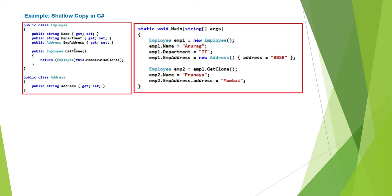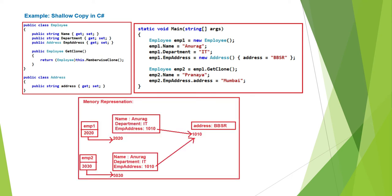When the GetClone method is called, it will create a clone object of employee1 and return that object to the caller. So now we have two objects: Employee1 and Employee2. Then we are updating the Name and Address property of employee2. To understand how shallow copy internally works, we need to understand the memory representation of this code.